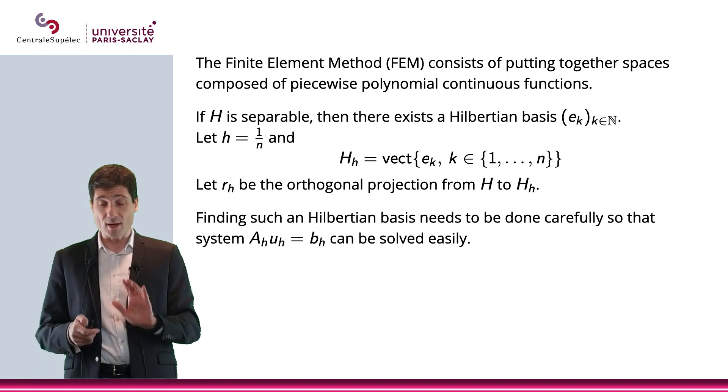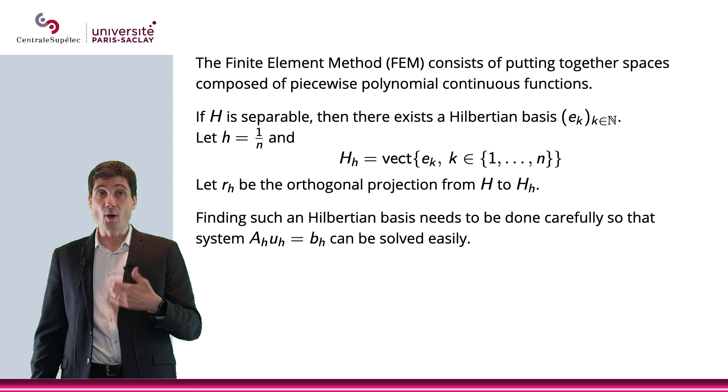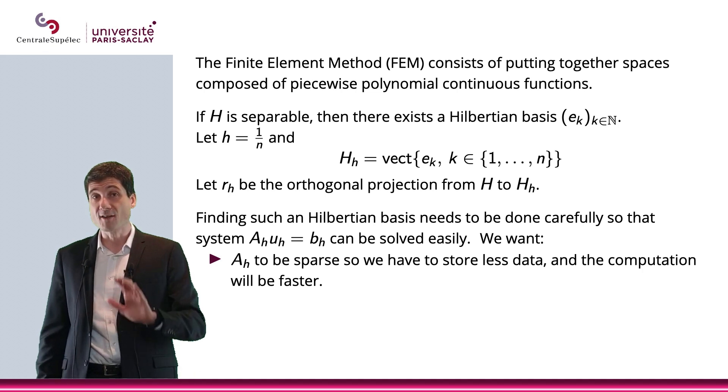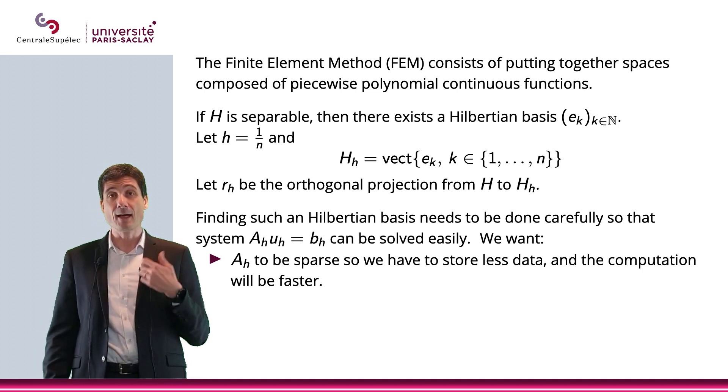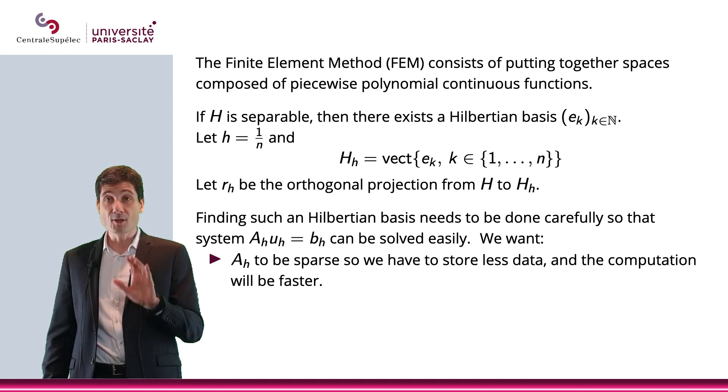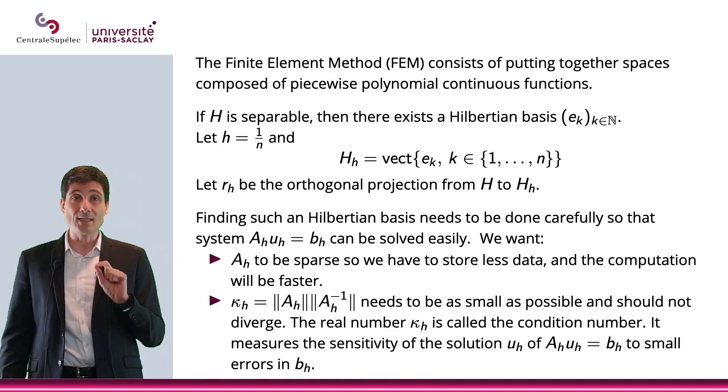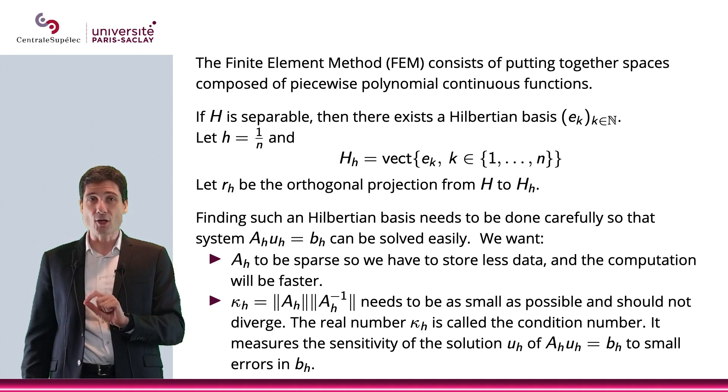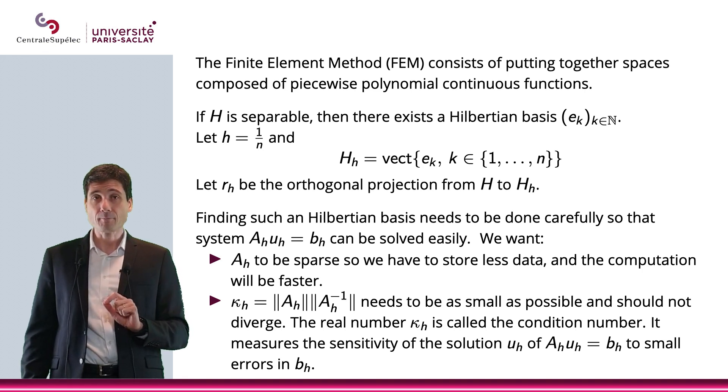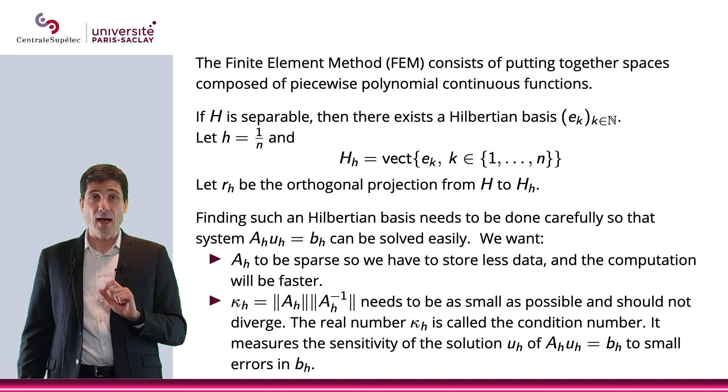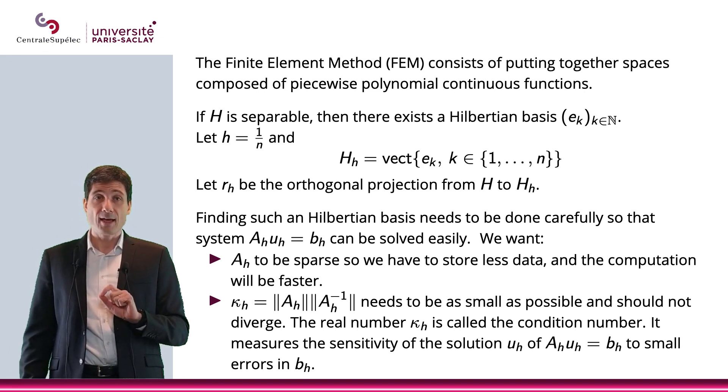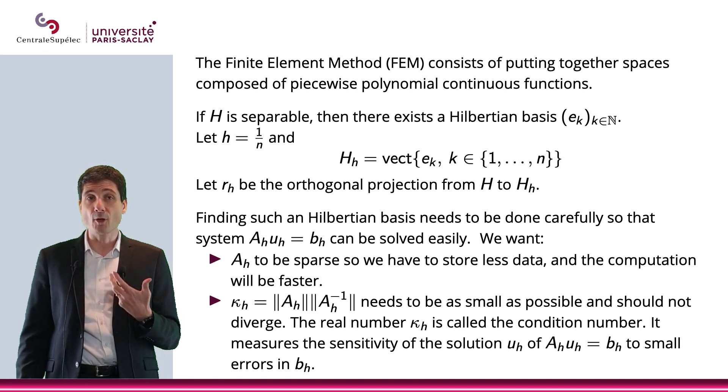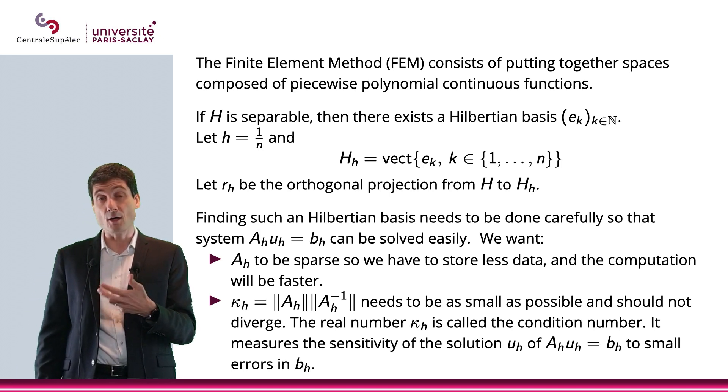This is why we will have a specific chapter in this course, chapter seven, where we will actually look at the methods for solving these linear systems. But already at this point, we need to be careful with these matrices A_h. We want them to be sparse for less data storage and faster computation. We also need the norm of A_h multiplied by the norm of the inverse of A_h to be as small as possible. That is called kappa, the condition number, and it measures the sensitivity of the solution u_h to small errors on the right hand side, on b_h.